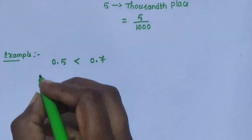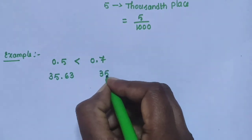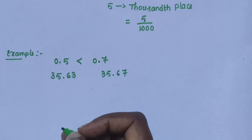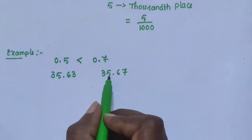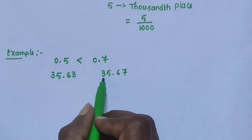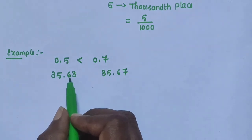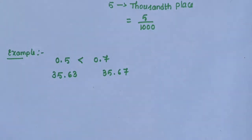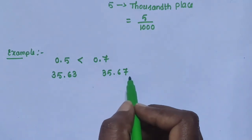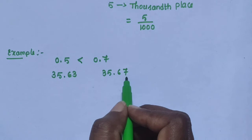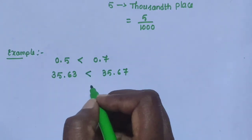Another example: compare 35.63 and 35.67. First compare the whole number part — units place is 5 and 5, same; tens place is 3 and 3, same. Next compare the decimal part — tenths place is 6 and 6, same. Now compare the hundredths place: 3 and 7. Since 7 is greater, 35.67 is the greatest decimal number. We also know about addition and subtraction of decimal numbers.